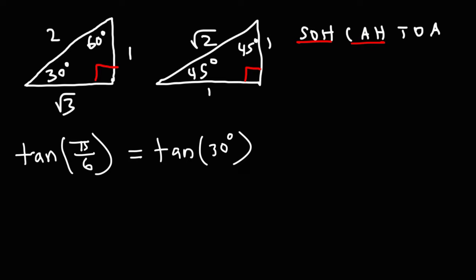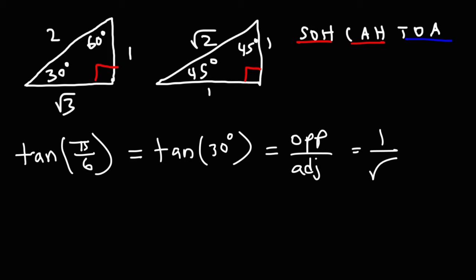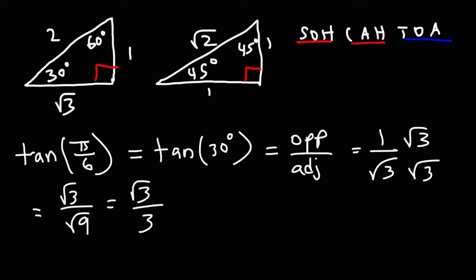What is tangent 30? Based on SOHCAHTOA, tangent equals opposite over adjacent. Opposite to 30 is 1, and adjacent to 30 is the square root of 3. To rationalize the denominator, multiply top and bottom by square root of 3. Square root of 3 times square root of 3 is square root of 9, which is 3. So tangent of π over 6 equals positive square root of 3 over 3.